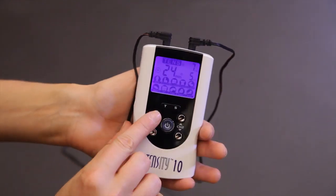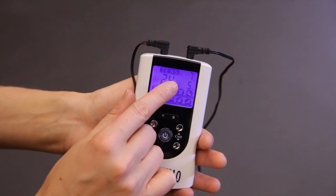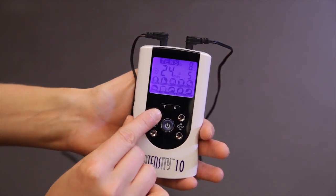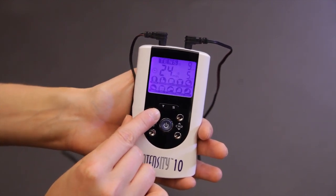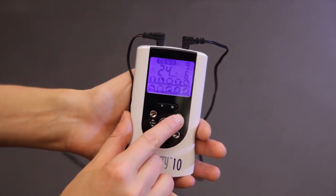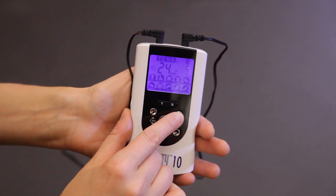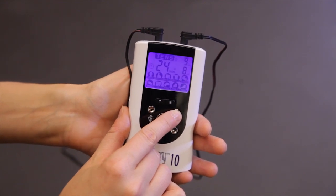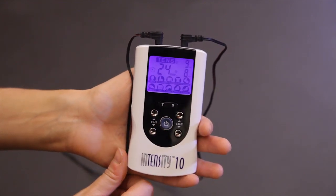The intensity control buttons are identified by the up and down arrows. Slowly increase the intensity for each channel until you've reached a desired level of stimulation. You'll experience a slight tingling sensation. To decrease the amount of stimulation, simply press the down arrow button.